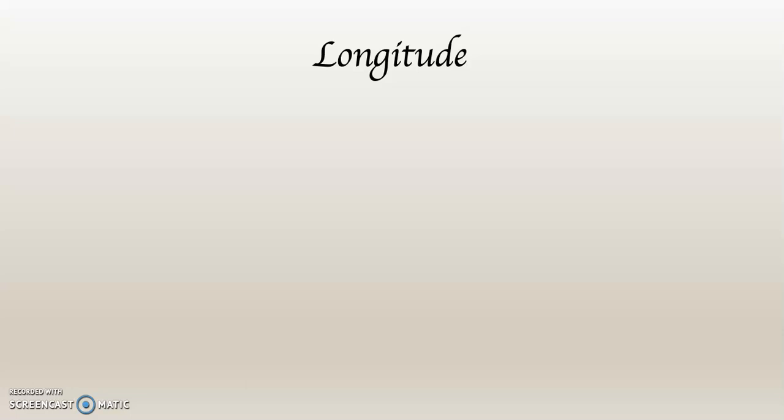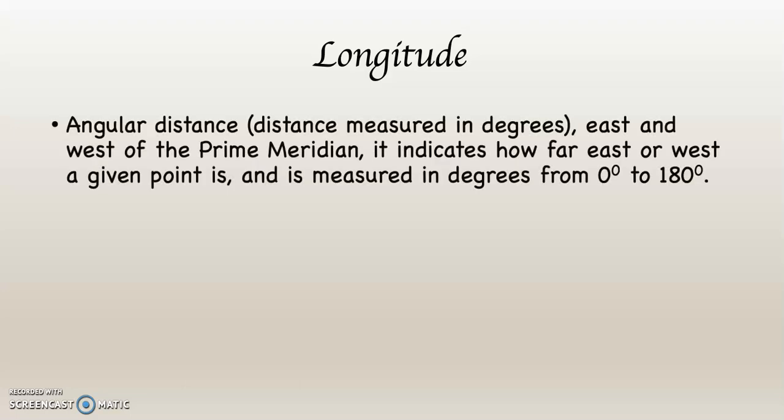This is the second lecture about the geographic grid. Number one was latitude. You can see where we are now — longitude. What's happening is I am building a grid on the surface of the planet, our fundamental locational system.